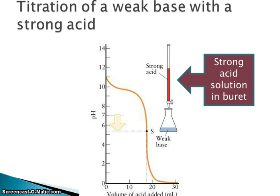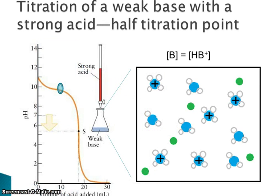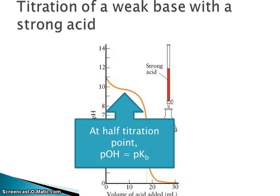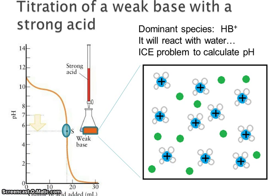As I continue to add acid from the buret, the pH drops. At the half-titration point — halfway to the equivalence point — the concentration of remaining base equals the concentration of conjugate acid produced, so we can state that the pOH equals the pKb. You'll need extra math since we're usually measuring pH. At the equivalence point, all the weak base has been converted to the conjugate acid — that's the dominant species — and to calculate the pH you'll need to do an ICE problem.